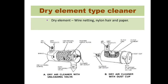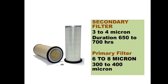The dry type cleaner may be made up of wire netting, nylon, hair, or paper, depending on the functioning and conditions of use. These are further divided into primary and secondary filters — a two-stage filter to ensure clean air. The mesh size is expressed in microns. In the primary filter, the mesh size used is 6 to 8 microns, and after 300 to 400 working hours the primary filter gets replaced. In the secondary filter, 3 to 4 micron mesh is used.